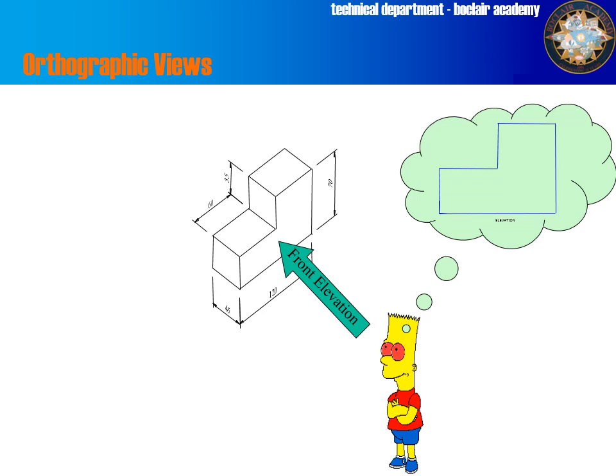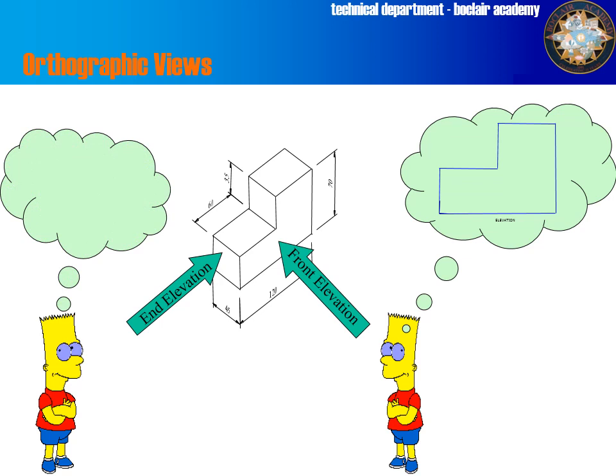So we think about where else Bart could go and see a totally different view, orthographic view, would be to go around to the side here. And this is looking now on the end elevation. So looking on the end elevation, again, think about what Bart would see. He would actually only see two parts of the block. He would see the square at the bottom and he'd see the square at the top and they would look like they'd be sitting on top of each other.